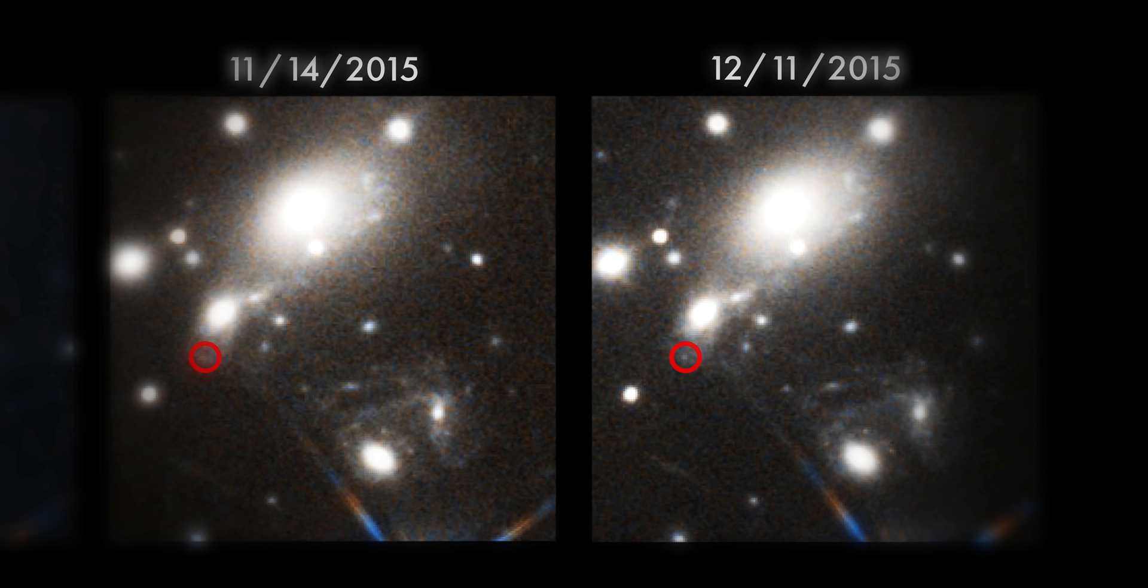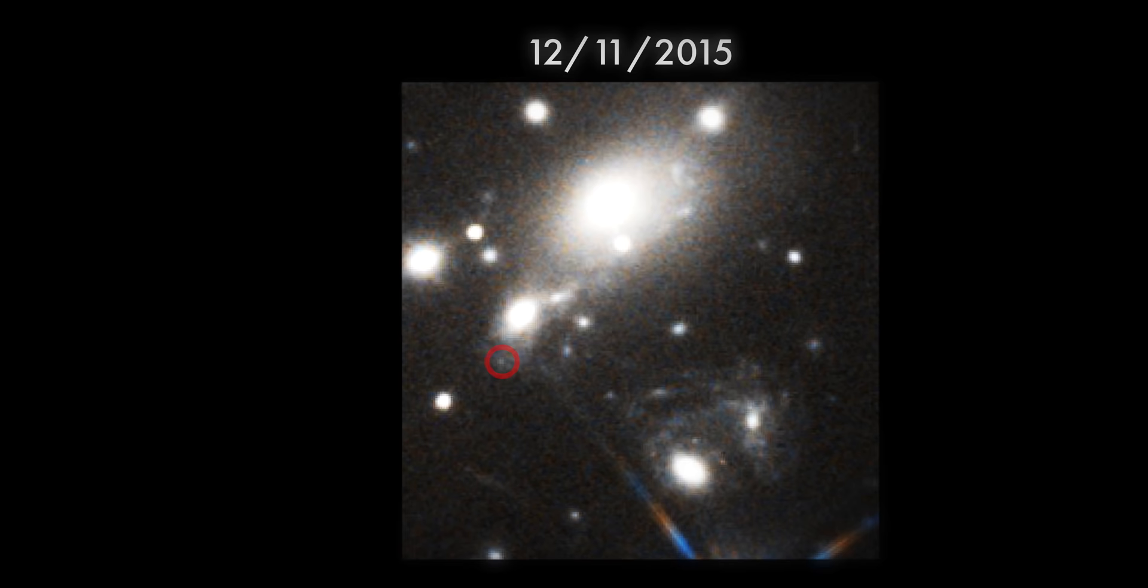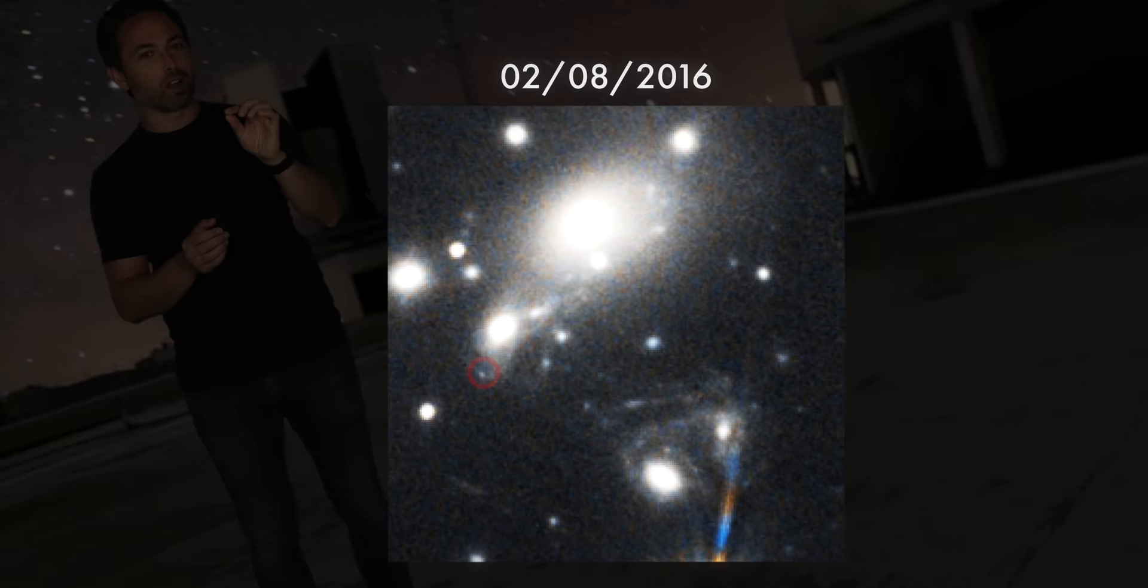So how did they manage to predict a supernova almost to the month? Well, the truth is they had seen this same exact supernova before. Not once, not twice, but four additional times.